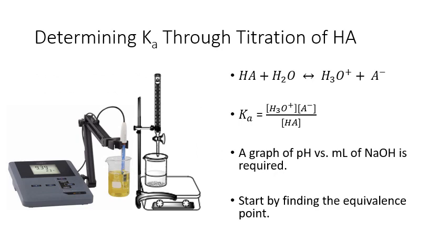We're determining the Ka through titration of a monoprotic weak acid. Because only a single proton dissociates, we represent this unknown weak acid as HA. When it dissociates in solution, it produces H3O+ and A-. The H3O+ is what gives our acid a lower, acidic pH.